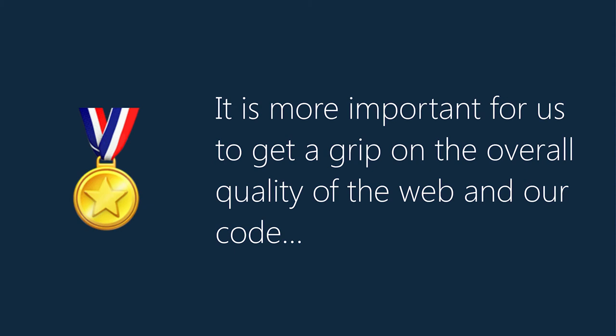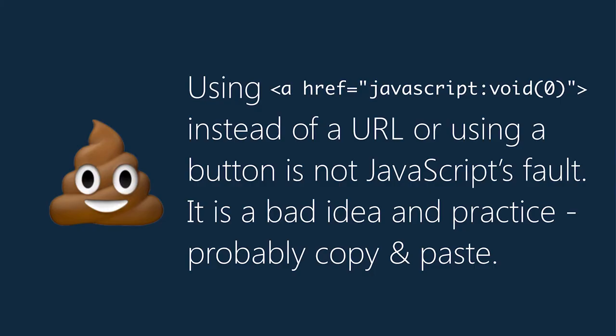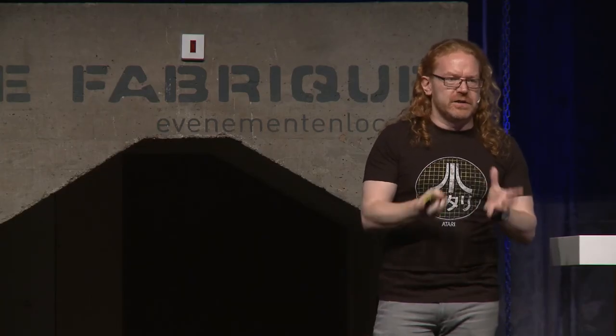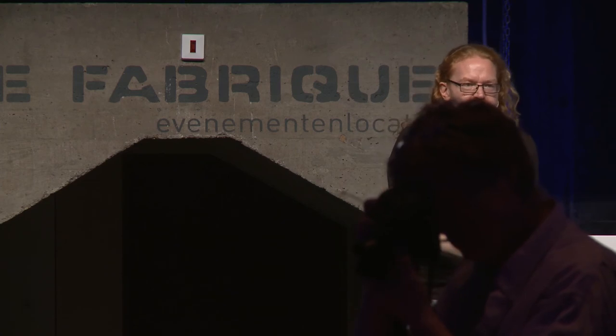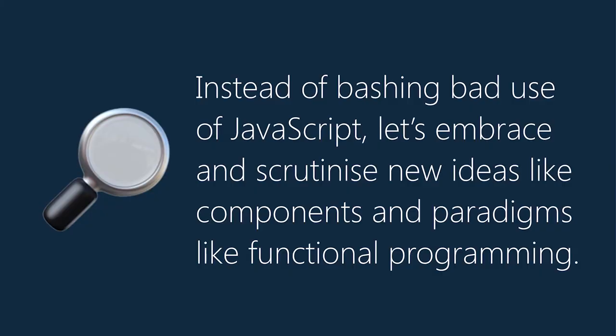It's more important to get a grip on the overall quality of the web and our code. When you see href="javascript:void(0)" instead of a URL or a button, it's not JavaScript's fault — it's a bad idea in practice, probably copied from Stack Overflow. I call it full-stack-overflow development: copy, paste, change random numbers, hope nothing breaks, get a paycheck. Why would anyone write href="javascript:void(0)"? We're lazy people — why write so many characters when using a button would do the same thing? If you click on that with a keyboard it does nothing; you've basically written "fail" with a lot of characters.